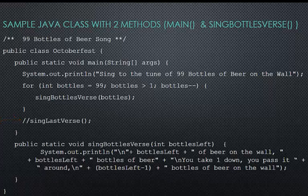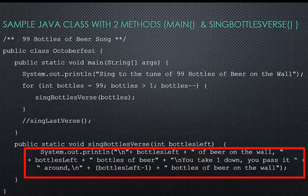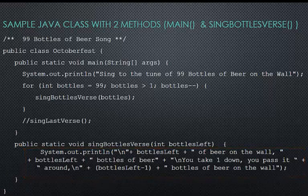Let's look at the Sing Bottles verse method. It has one input named Bottles Left. Inside the method, we print out the words to the verse. Bottles left of beer on the wall. Bottles left, bottles of beer. You take one down. You pass it around. Bottles left minus 1. Bottles of beer on the wall. So depending on which number is passed into the verse, we'll dictate how many bottles of beer are still on the wall. And after we take one down, what that number minus 1 would be.